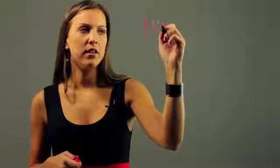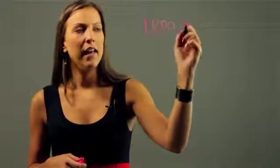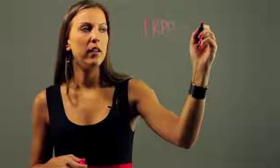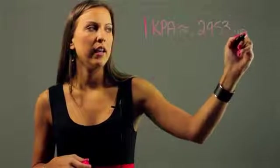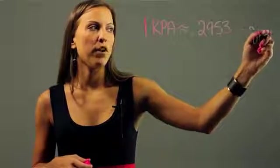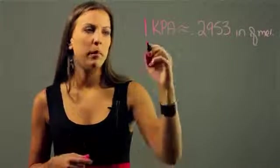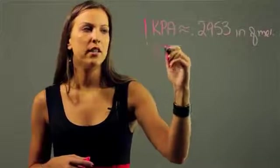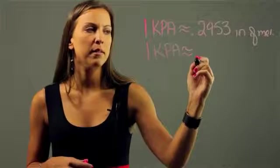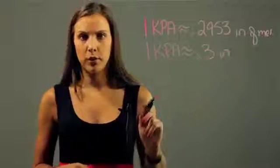So the conversion you need to know is that 1 kPa is approximately 0.2953 inches of mercury. So I'm going to estimate this a little bit more to make it easier for our conversions. And we'll say that 1 kPa is approximately 0.3 inches of mercury.